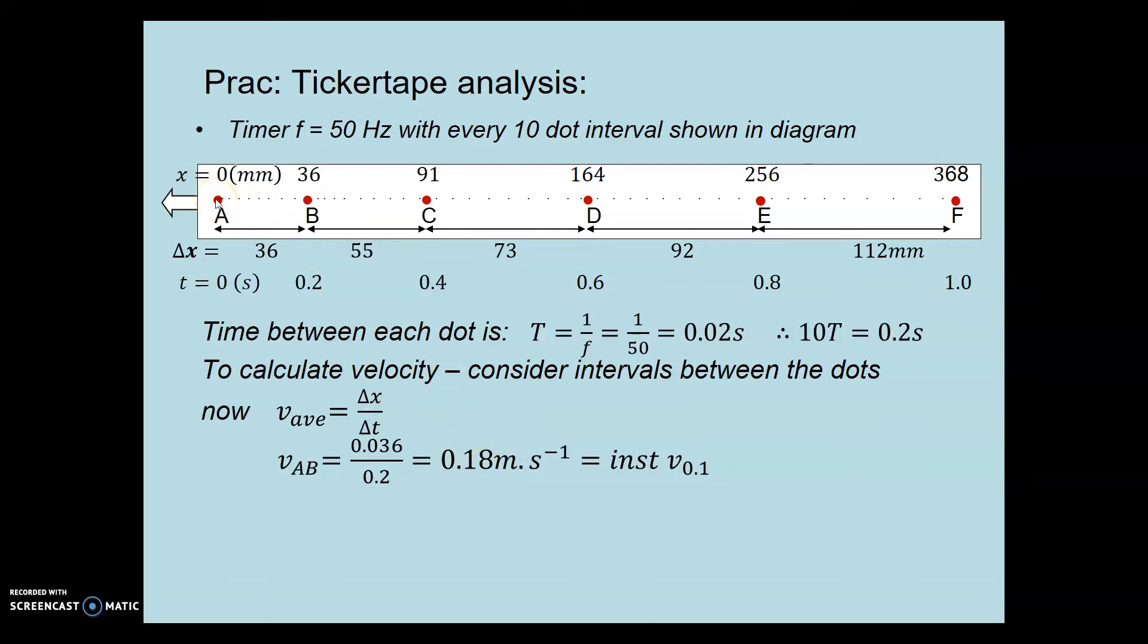Now when was it moving this fast? At A it was moving slower than that, and at B faster. But if we look at halfway during that time interval, halfway between 0 and 0.2 gives us an instantaneous velocity at 0.1 seconds.